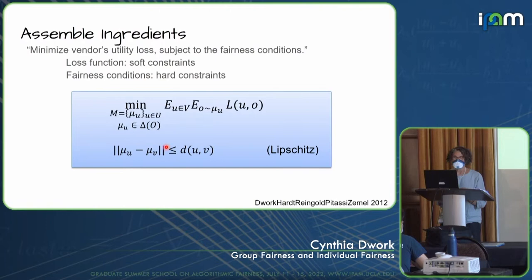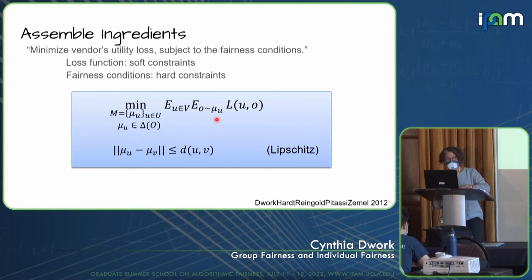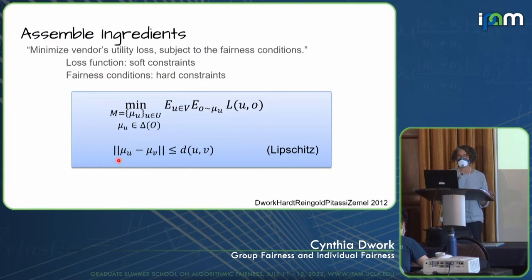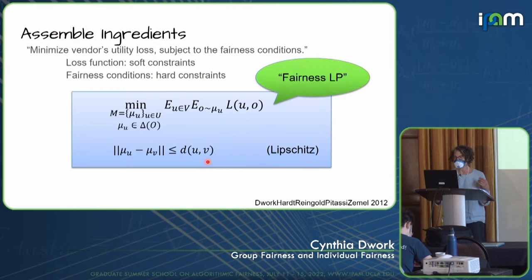Surprisingly, this already gives us our first algorithm. We have the loss function, which imposes soft constraints, and we have the metric, which imposes hard constraints. We put them together into a linear program — the fairness linear program. It finds a collection of probability distributions mu sub u, each a distribution on the outcome space O, minimizing expected loss. The constraint is that for any pair u, v of individuals, the distance between their distributions is bounded by the metric distance between u and v. Those are the Lipschitz conditions. This is something you can solve using linear programming.